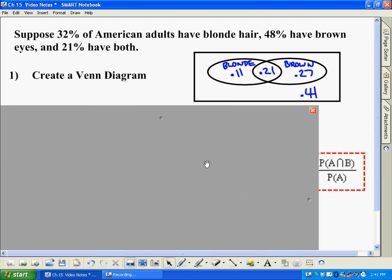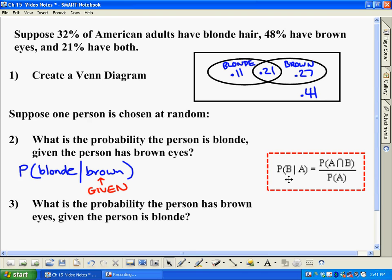So the formula for figuring that out looks something like this over here. It says the probability of event B happening, given A has already occurred. So this blonde would be the B event, and brown would be the A event here. It equals the probability, this means intersection, that means the probability of both occurring, divided by the chance of just the given information occurring. So this is both, and this one is given.